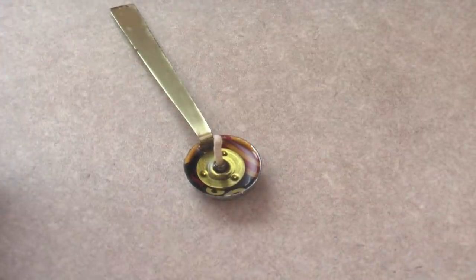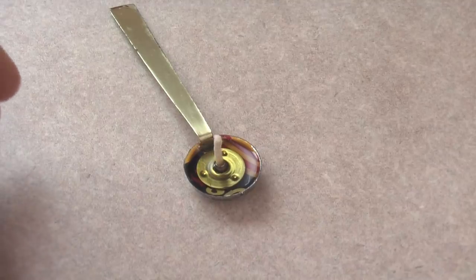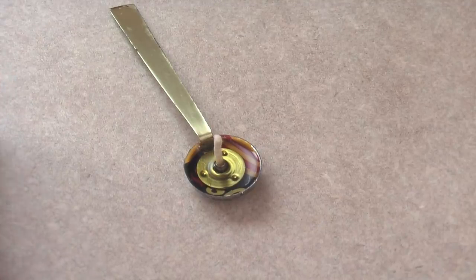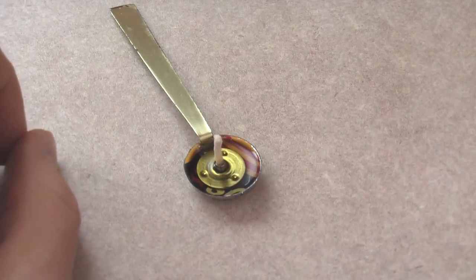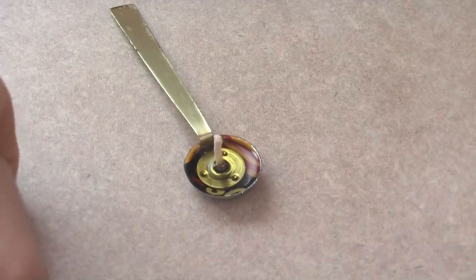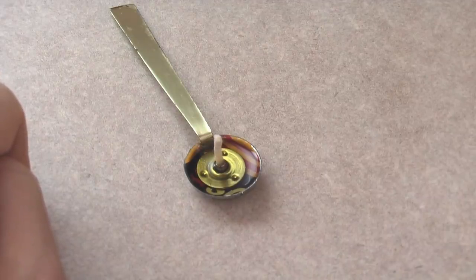You just want the wick to stick out of the olive oil about a quarter of an inch. This wick I could probably actually pull down about an eighth of an inch just because it's sticking out a little bit too much. Basically the more wick that's sticking out, the bigger the flame you're going to get. And a quarter inch sticking out seems to work pretty good. Even an eighth of an inch sticking out might work.